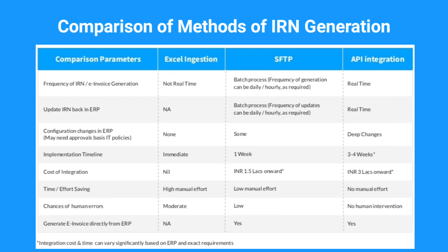Regarding configuration changes in ERP: there are no configuration changes required in the case of Excel ingestion, whereas there are a few minor configuration changes required for SFTP, whereas in the case of API, there are certain deep changes done to allow integration. Implementation timeline is immediate for Excel ingestion, one week for SFTP, and three to four weeks for API integration. The cost of integration is nil for Excel ingestion, Rs 1.5 lakh onwards for SFTP, and Rs 3 lakh and onwards for API integration with ClearTax.